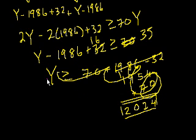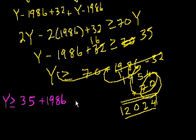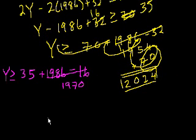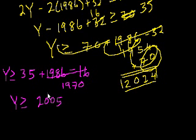So I have y is greater than or equal to 35 plus 1986 minus 16. This equals 1970. Then we have 35 plus 1970. So y has to be greater than or equal to 2005, which is choice C. And I'm out of time. Sorry for that careless error. I'll see you in the next video.